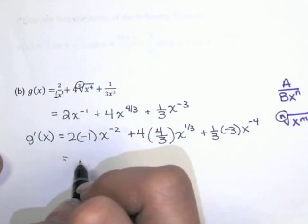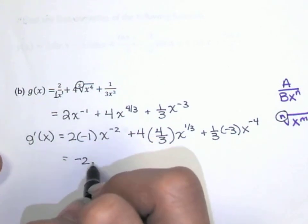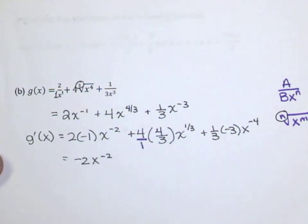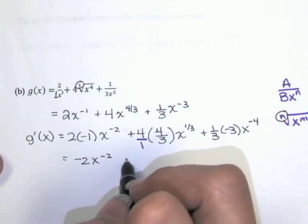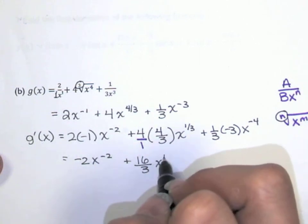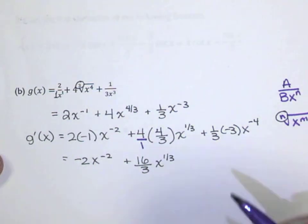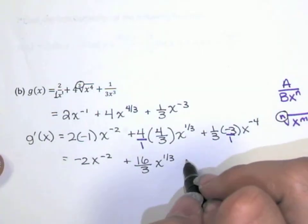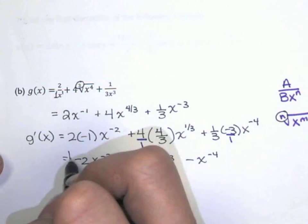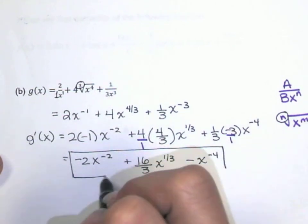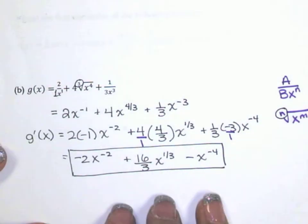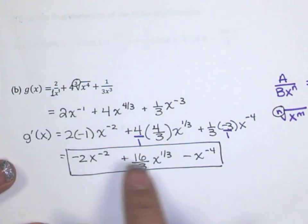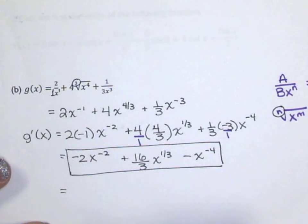So I've got this now, and I simplify. 2 times negative 1 is negative 2. Here there's an implied 1 under that 4, so multiply straight across: that's 16 over 3 times x to the 1 third. And there's an implied 1 there as well — multiply straight across and you get negative 3 over 3, which is negative 1, times x to the negative 4th. So this is g prime. If you're checking your answer in the back of the book, they'll probably write it using roots and positive exponents.